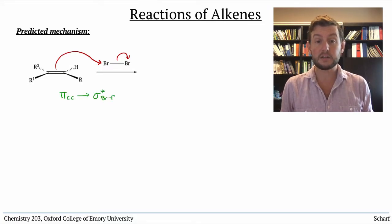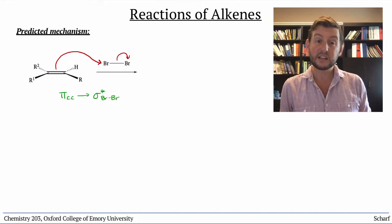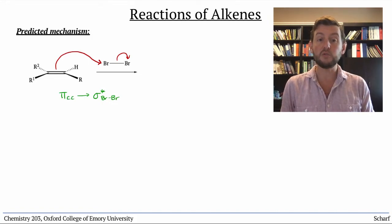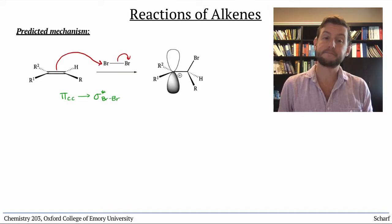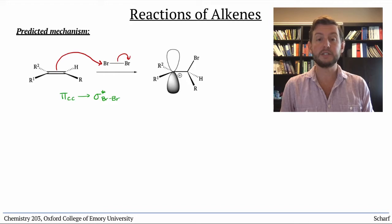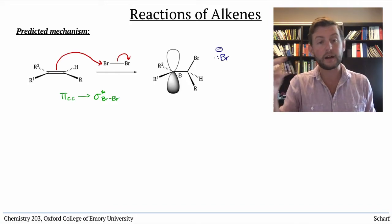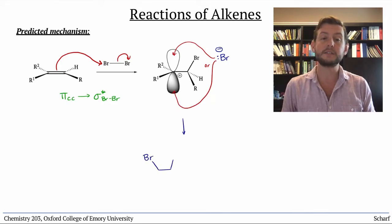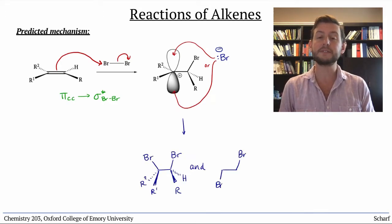By analogy to the reaction with HX, we can see that we'd make a new carbon bromide bond, kick out the Br-, and be left with a carbocation. Then we would imagine that the carbocation's empty p orbital could be filled from either side by that Br-, giving us a mixture of stereoisomers.